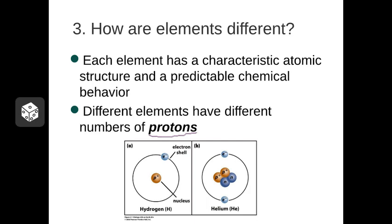For instance, hydrogen — the smallest type of atom — has a single proton and a single electron. It doesn't even have a neutron. Helium, the next largest atom, is really different: it has two protons, two neutrons, and two electrons. It's really the two protons that make it behave like helium. If we took hydrogen and jammed another proton into its nucleus, it wouldn't behave like hydrogen anymore — it would behave like helium.